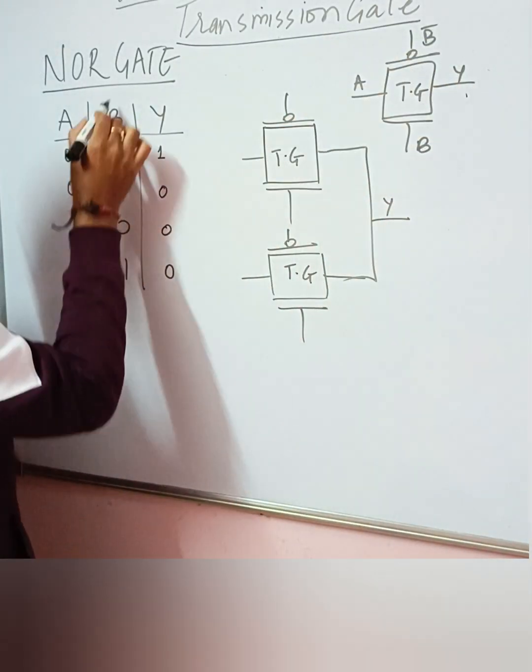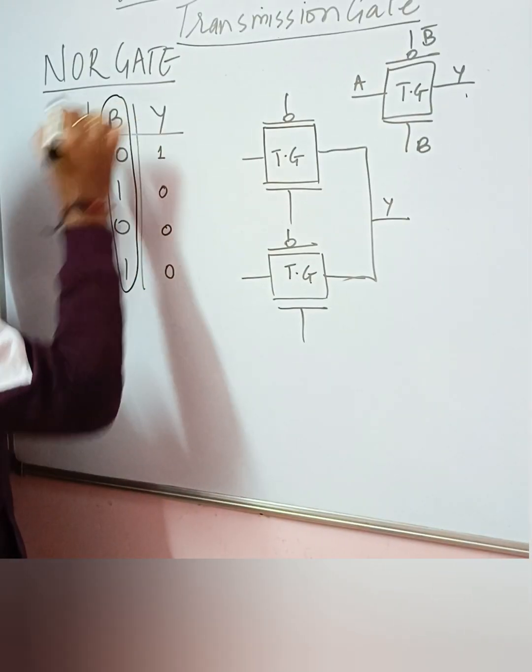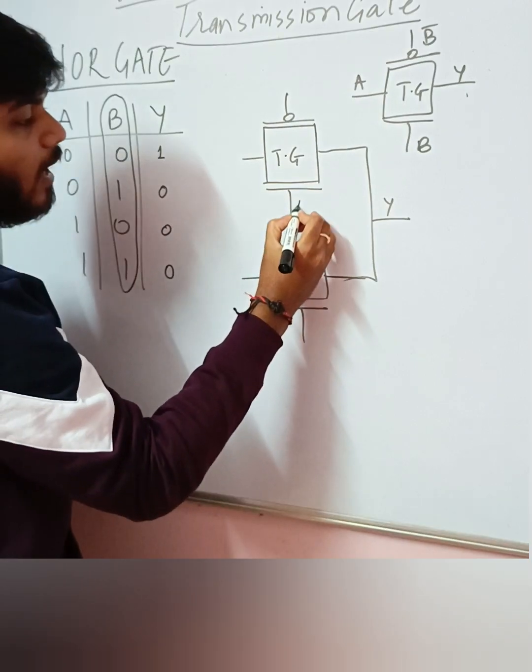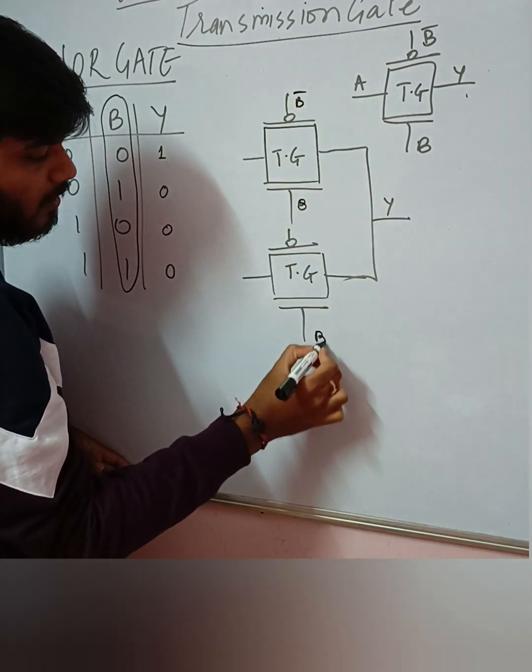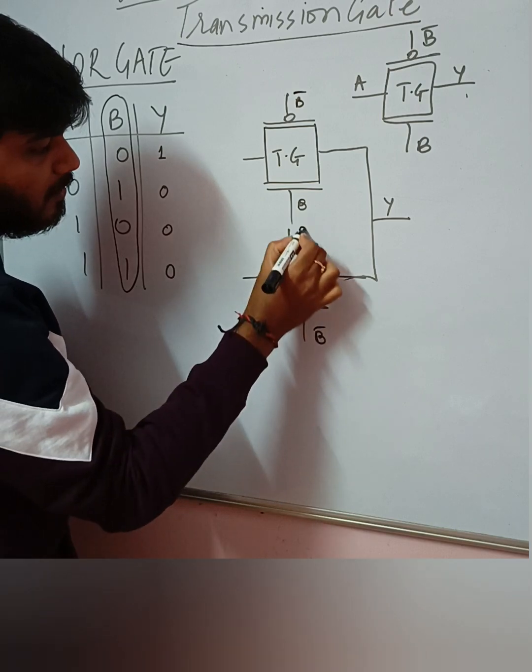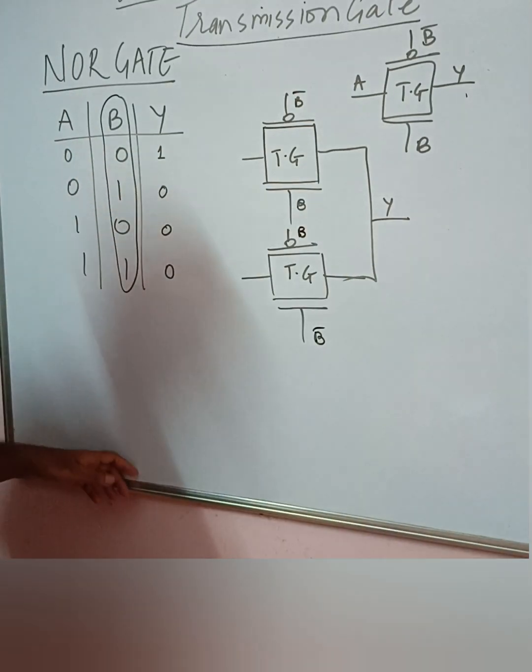Here, as you can see, this is a control signal. We'll be assuming B as a control signal here. So B is the control signal. Now this I will put as B, and this will be B-bar, and this is B, B-bar, and this is B here. Okay, this has to be connected to each other.